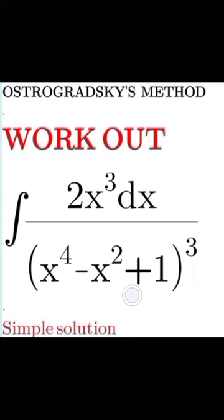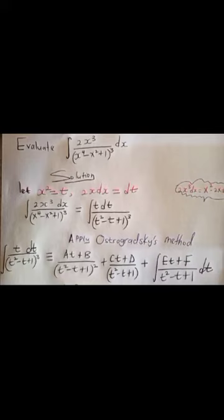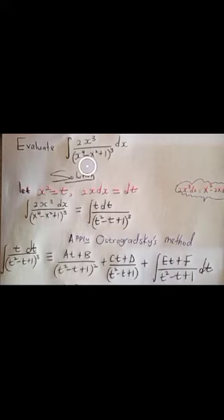We shall see this simple solution as we work out this problem. First of all, I'm going to simplify it by letting x squared equal t. Looking at the numerator, which is 2x cubed, this can be written as x squared times 2x dx. When you differentiate, you get 2x dx which equals dt. By substituting back, instead of writing 2x dx I write dt, and the denominator changes accordingly.